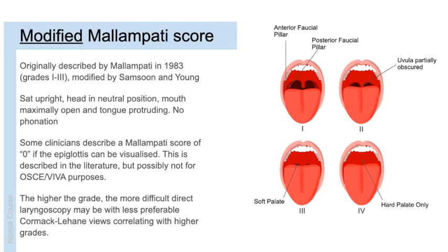Touching on the modified Malampati score in more detail — this is probably the commonest anaesthetic airway test. As originally described by Malampati in the 1980s with three grades, and subsequently modified by Samsoon and Young to four grades, this is the score we now use. While it's best practice to perform all examination components, at a minimum most anaesthetists will look inside the mouth and ask the patient to stick out their tongue to arrive at this grading.